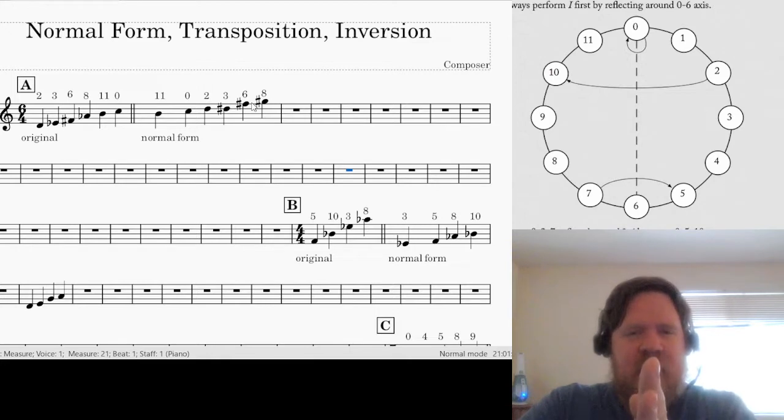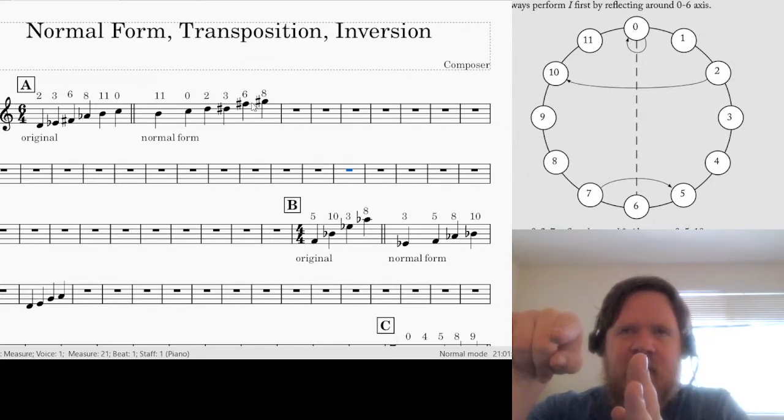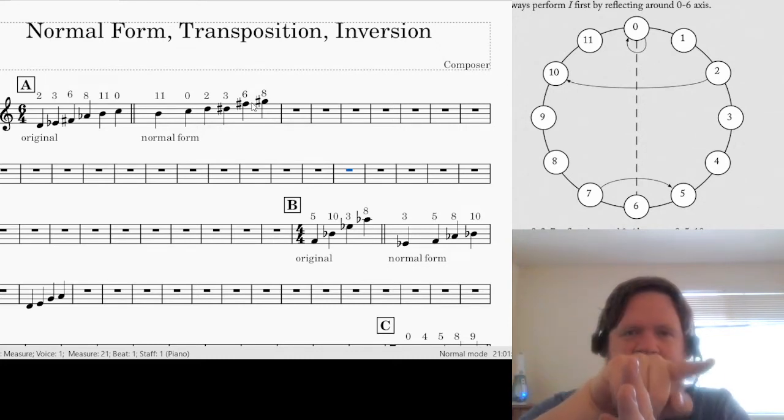So think about the note C on the keyboard. Here's middle C. Suppose I have an E-flat over here. If I want to invert this E-flat in set theory, the E-flat is a minor third above the C. If I want to invert the E-flat, it's going to give me an A, which is a minor third below the C.